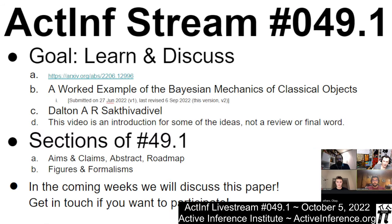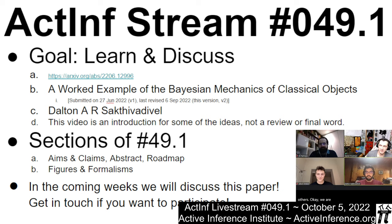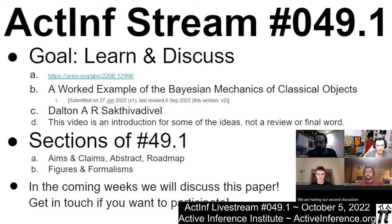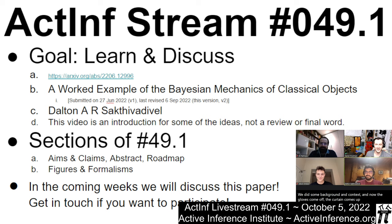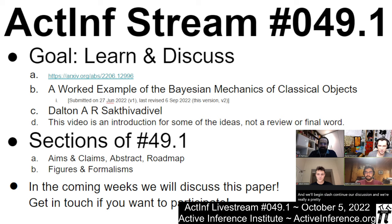We are here in live stream number 49.1. We are having our second discussion on the paper, 'A Worked Example of the Bayesian Mechanics of Classical Objects.' In number 49.0, along with Jakob and Ali, we did some background and context, and now the gloves come off, the curtain comes up, and we'll begin and continue our discussion. We're really appreciative, Dalton, that you've joined today.